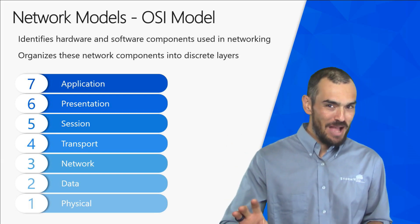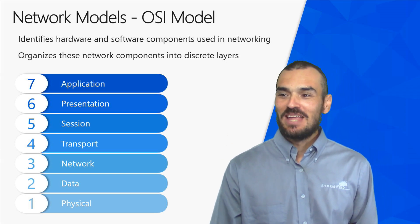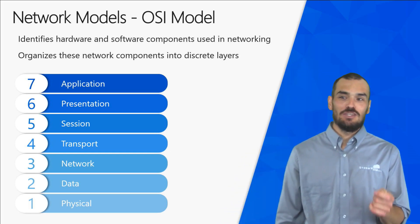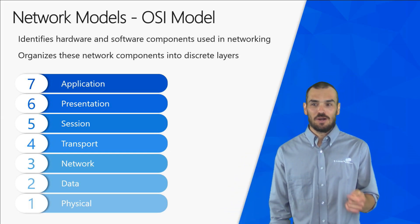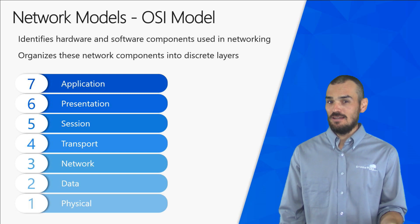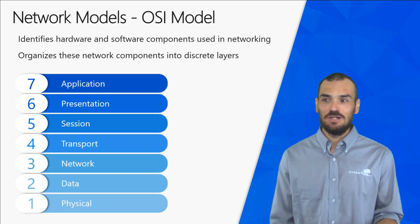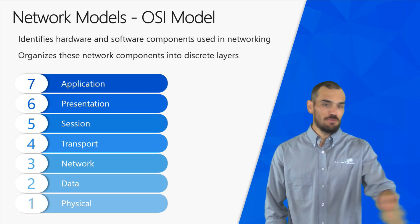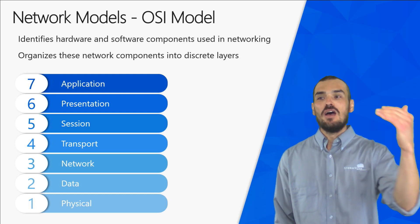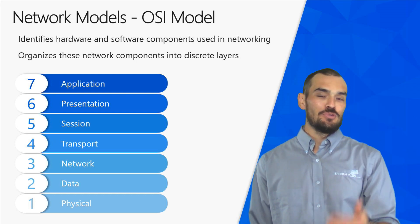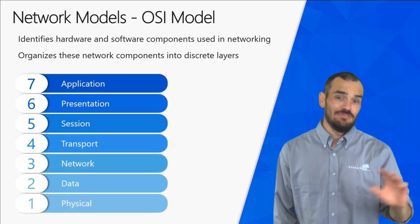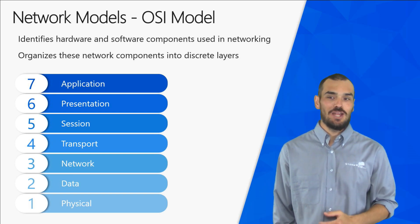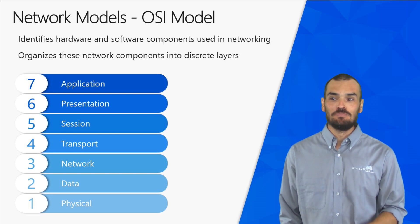You want to remember the layers using an acronym. If you're going from layer seven down to layer one, use: All People Seem To Need Data Processing — Application, Presentation, Session, Transport, Network, Data Link, and Physical.